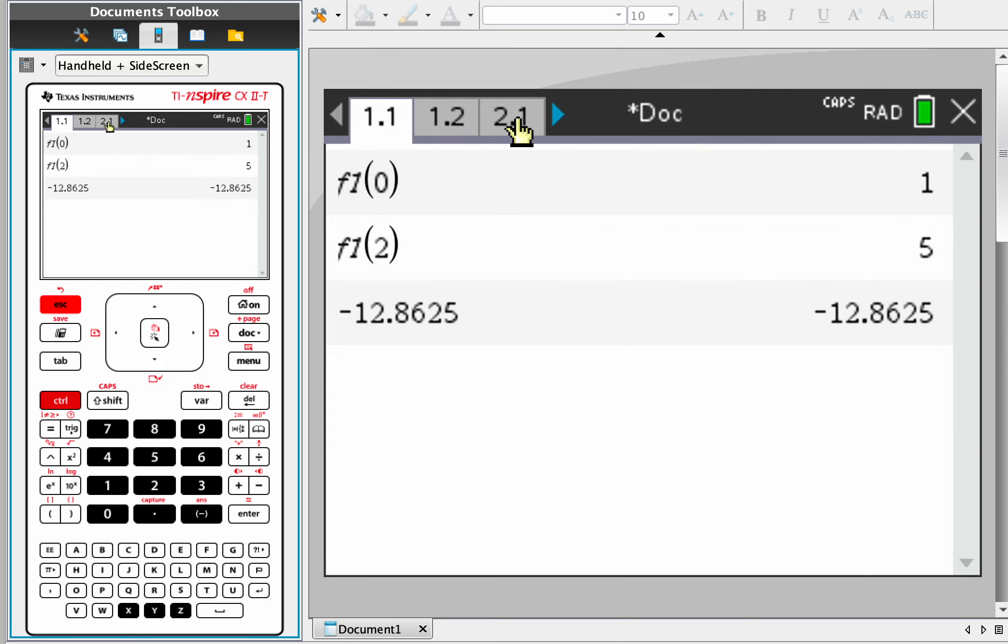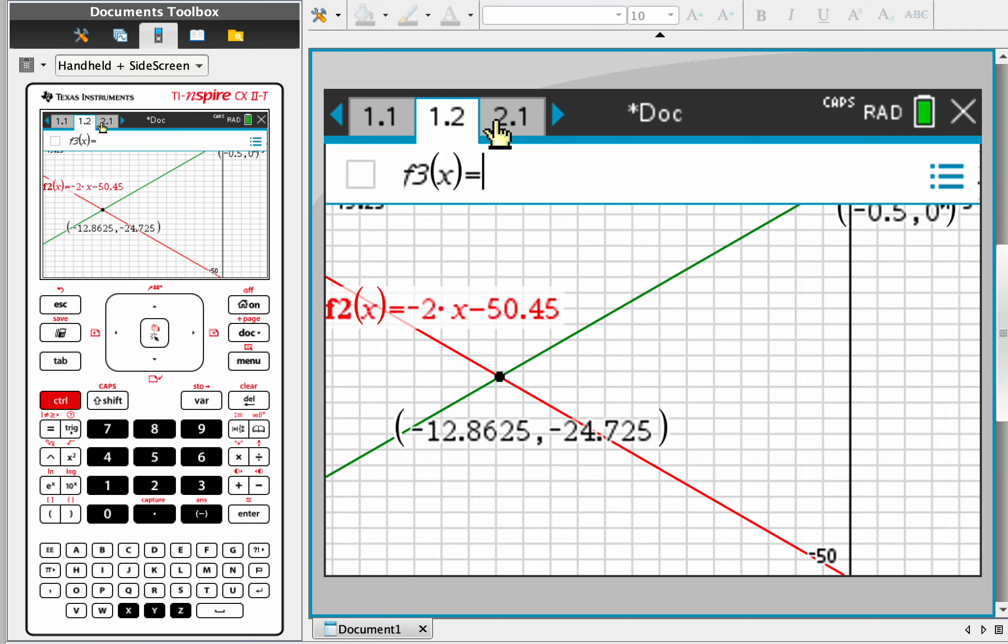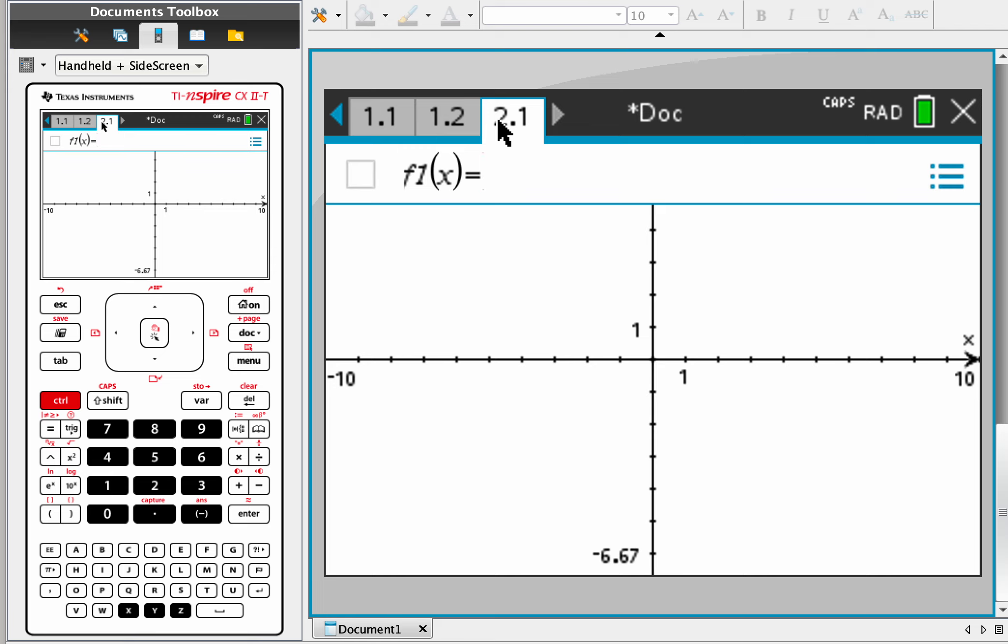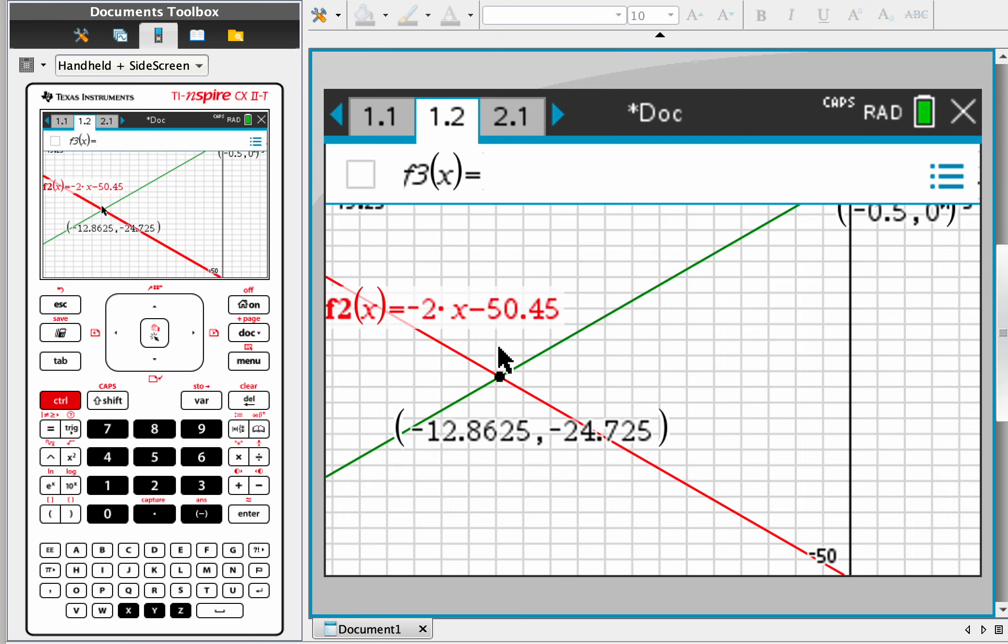But if you go to a new problem, so say this is question 2 on a test, well that no longer exists. So these two are not related anymore, which is kind of nice. You can start over here, and that can be useful if you're doing a test and you have a lot of entries or graphs and it can get confusing.